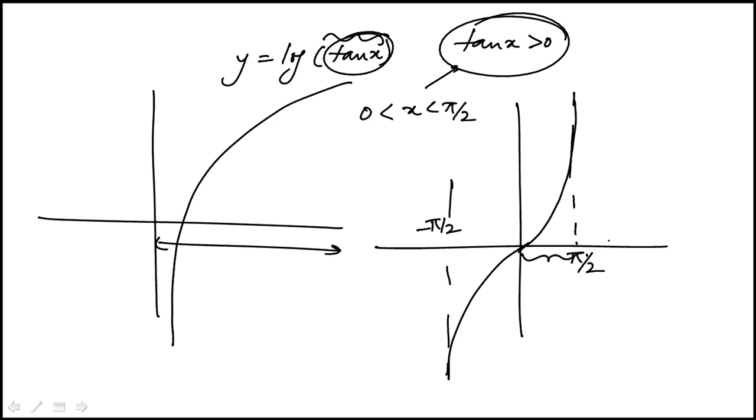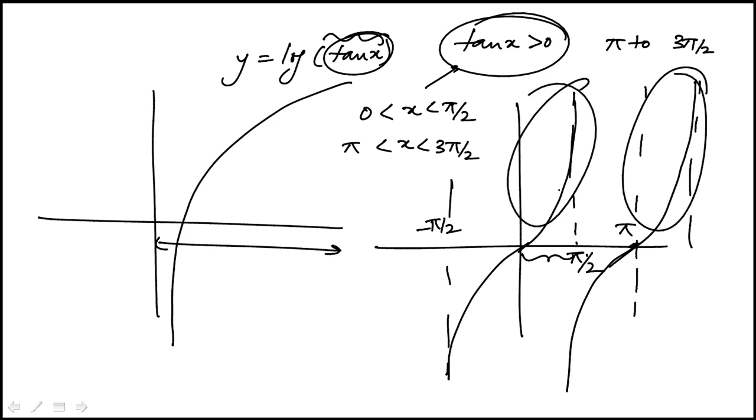Now tangent is a periodic function. If you were to draw this out, this would be at pi, and it would be only this piece from pi to 3 pi over 2. So x could also be between pi and 3 pi over 2, and this keeps going on both sides. You're only looking at the piece where the tangent function is positive.